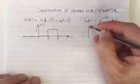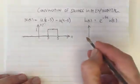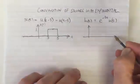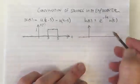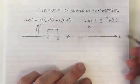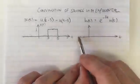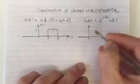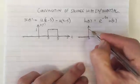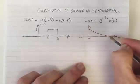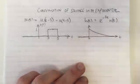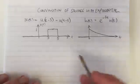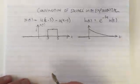On this side we have h(t). It equals 0 on the left-hand side of the axis, and then it's a decaying exponential — e to the minus 3t — because it's multiplied by a step function. Those are the two functions.